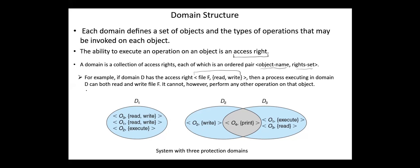Domains may share access rights. For example, in this figure we have three domains: D1, D2, and D3. The access right of print is shared by domains D2 and D3. A process executing in any of these domains can print object 4.